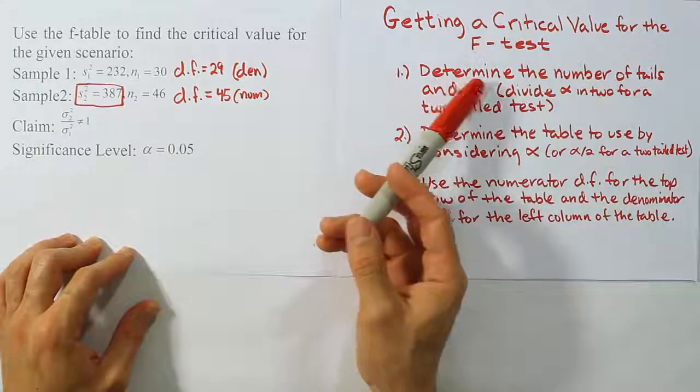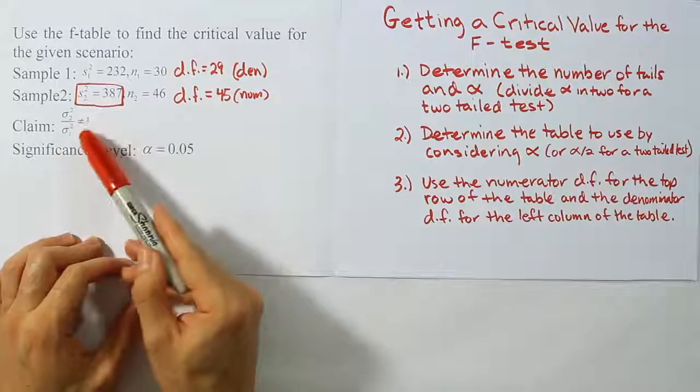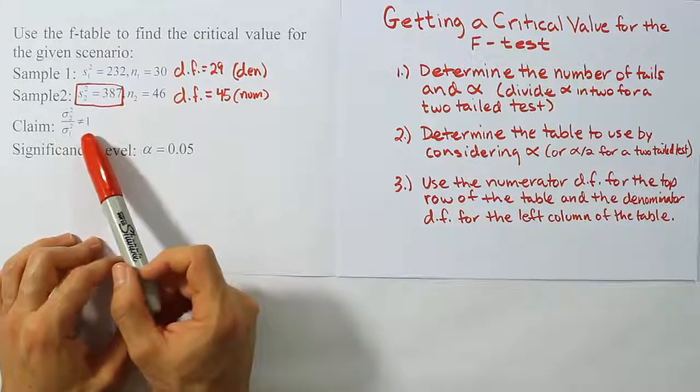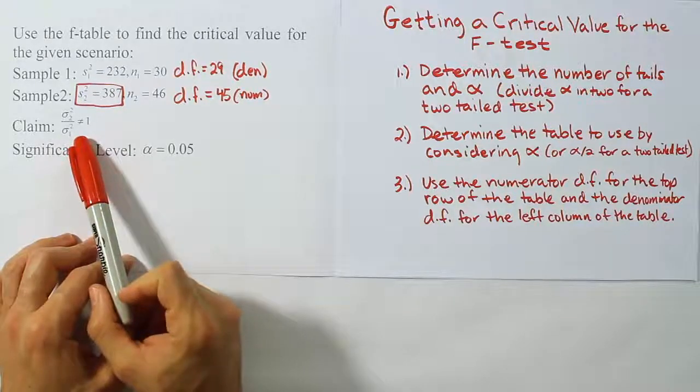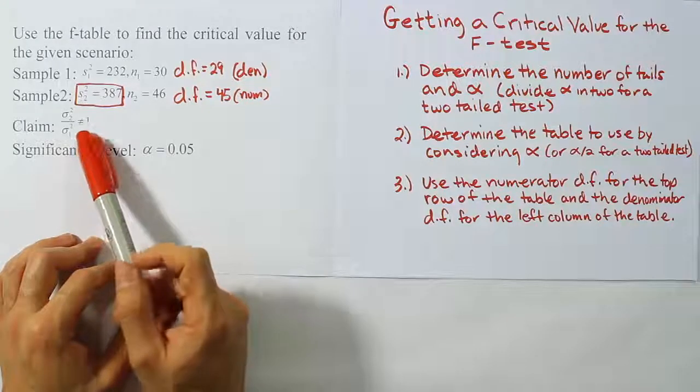So let's determine the number of tails and alpha. So we're going to look at our information here and look at our claim first to figure out how many tails we'll be dealing with. With a not equal to here in our claim, we're going to assume that we're dealing with a two-tailed hypothesis test.